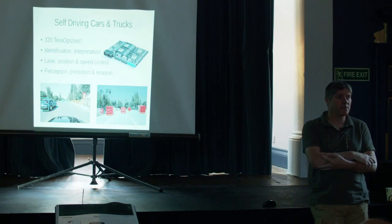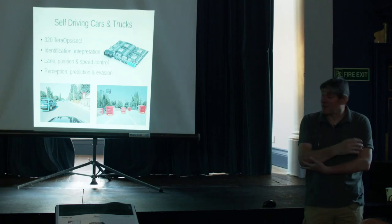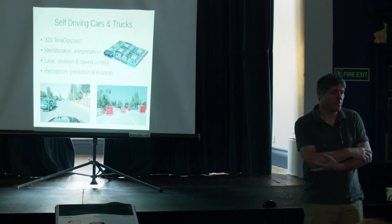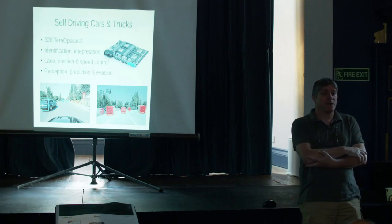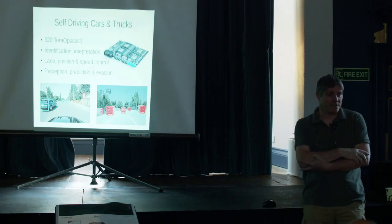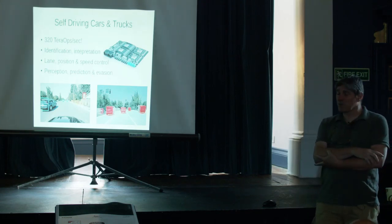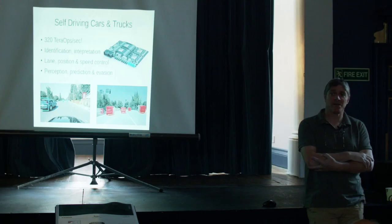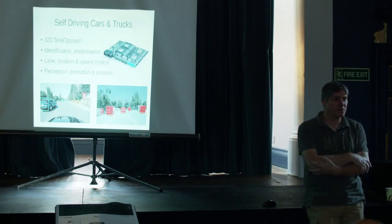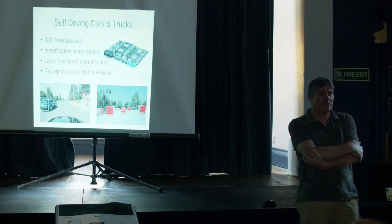The NVIDIA board currently being put into many self-driving cars has about 320 tera-ops per second — an incredible amount of processing power on a board that size. It has CAN bus controls to hook into standard car electronics. It has to deal with identification and interpretation of objects and people around the car, lane position, speed control, driving within lanes, overtaking, following a road, and preferably not going over the pavement or running people over.